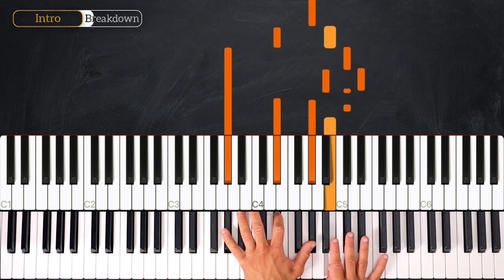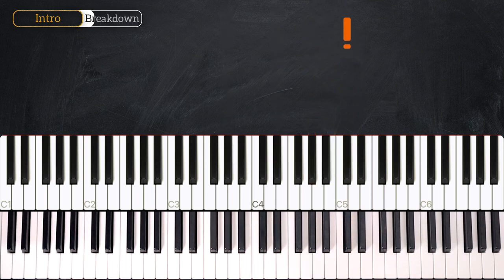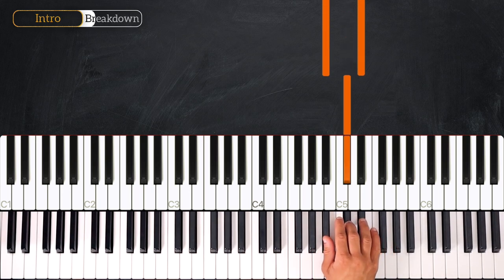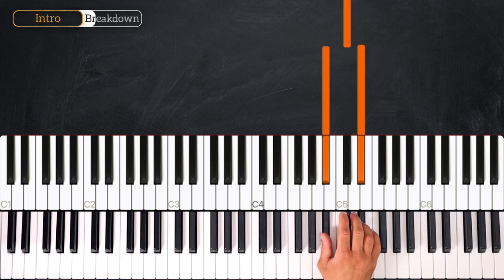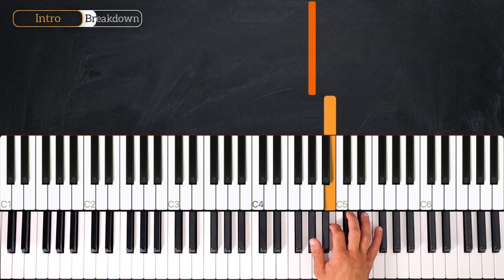And then we'll play this. So the right hand plays C. Then we flick from C to A D. Back to C, B, G.